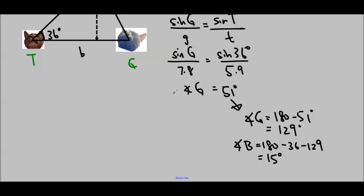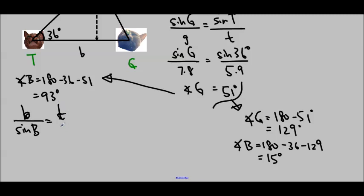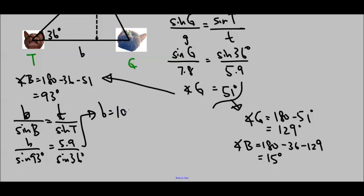So that's another way to figure out whether or not you have two triangles. Just try to find the second triangle. If we go with this first case, angle g equals 51, so angle b equals 180 minus 36 minus 51, which is 93 degrees. Then I'll use my sine law again. Little b over sine b equals little t over sine t. We're using the t's because those were given in the question. So little t is 5.9 and big t is 36 degrees. And that gives us that little b equals 10.0 meters approximately.